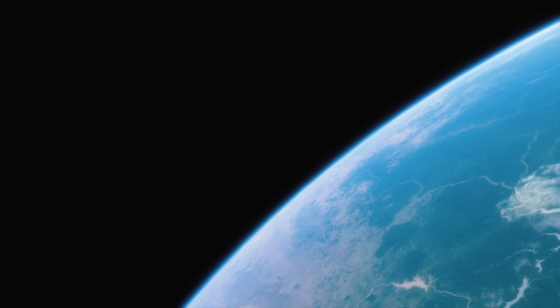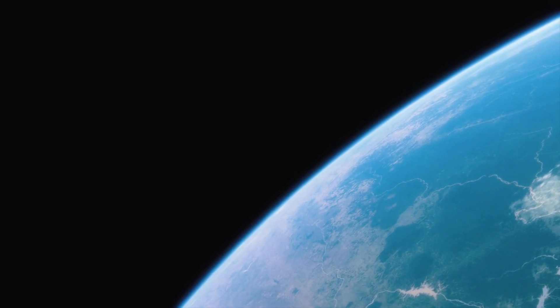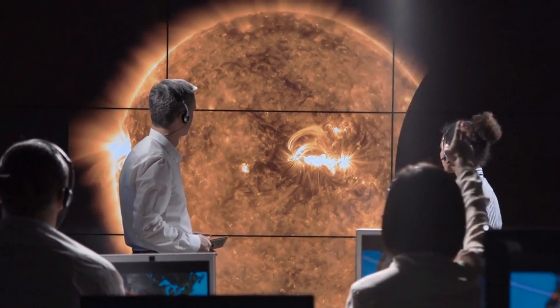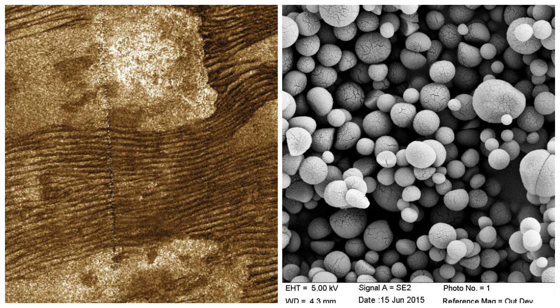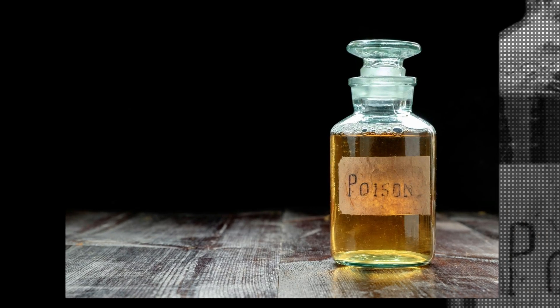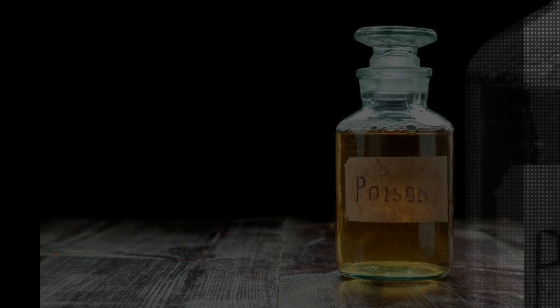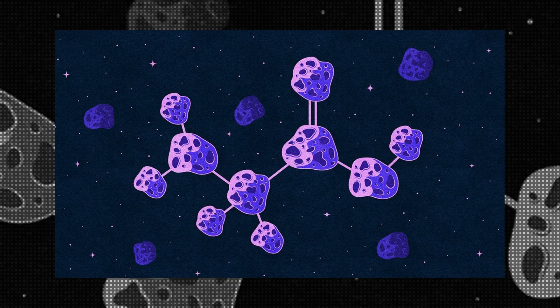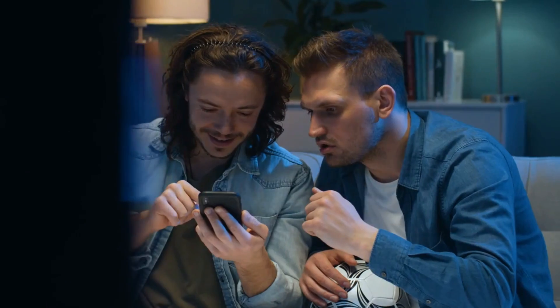The second theory, on the other hand, suggests that life on Titan could exist in a different form, utilizing different chemical processes than those found on Earth. Some scientists believe that the presence of organic molecules on Titan, such as sand and tholin haze, may support microbial life that does not require liquid water to survive. This hypothesis is supported by the discovery of hydrogen cyanide in the atmosphere, which is a key ingredient for the formation of amino acids, the building blocks of life.